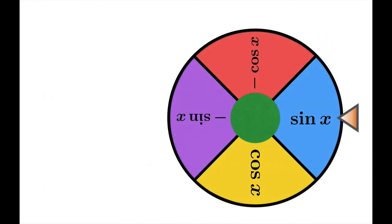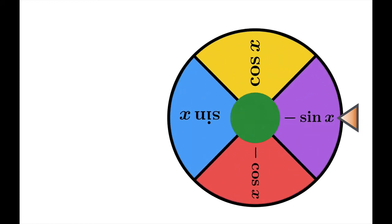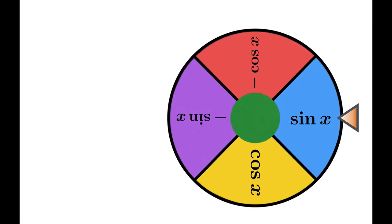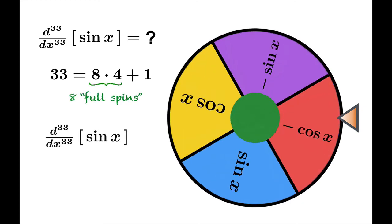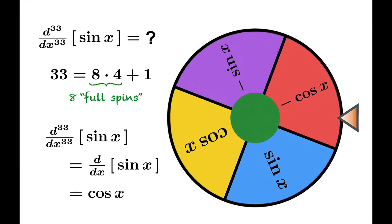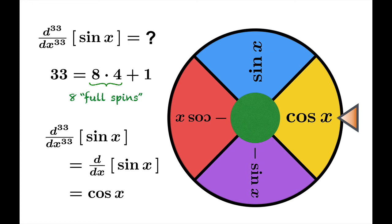The derivative of sine is cosine. The derivative of cosine is negative sine. The derivative of negative sine is negative cosine. And the derivative of negative cosine is sine. If you run across a problem like this, you should understand how this wheel works. If you want to take 33 derivatives of sine, you should think that every fourth derivative puts you right back to where you started. 33 is 8 times 4 plus 1, so that means we're going to take 8 full spins and there's going to be 1 quarter turn left over. In other words, the 33rd derivative of sine is going to be just the same as the first derivative of sine, and that should give you cosine.